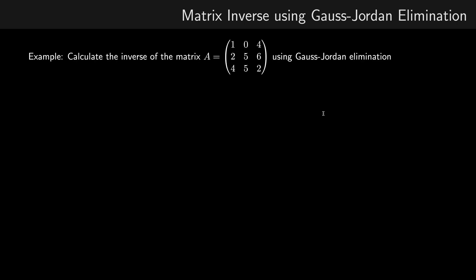I'll show this by way of example. Here we've got a 3 by 3 matrix A and I'm going to calculate the inverse using Gauss-Jordan elimination. The first step is to form the augmented matrix where to the left of the partition we have matrix A and to the right we have the 3 by 3 identity matrix.